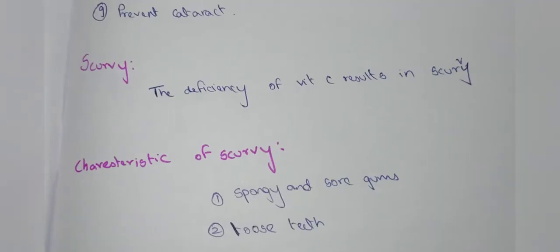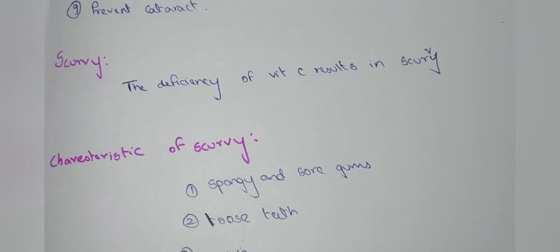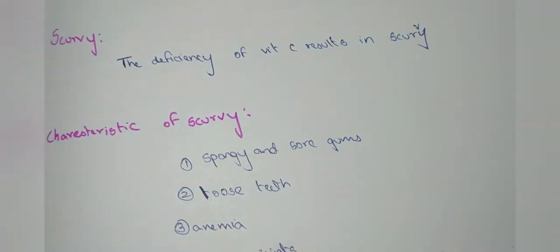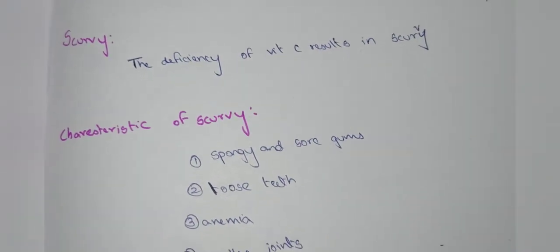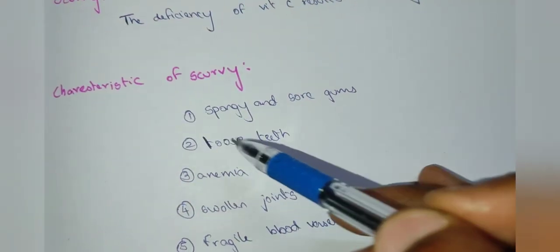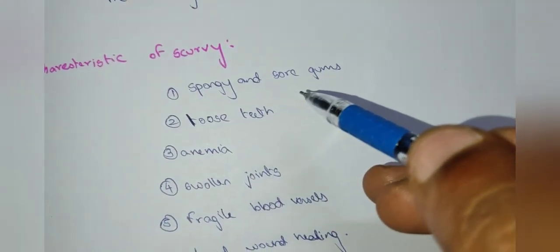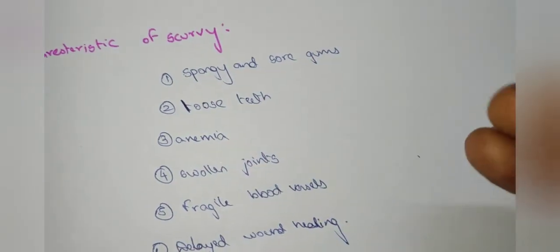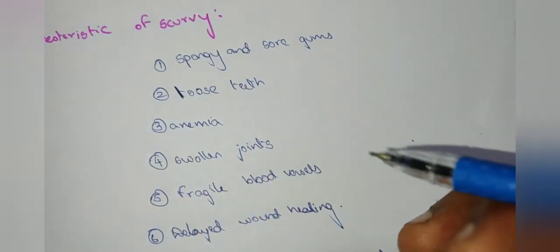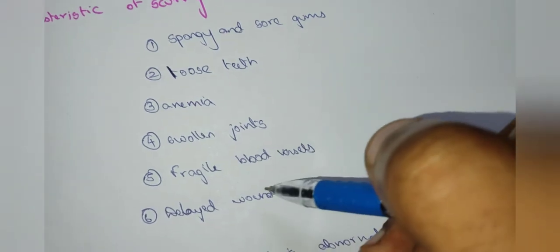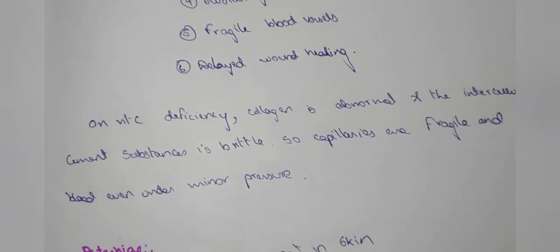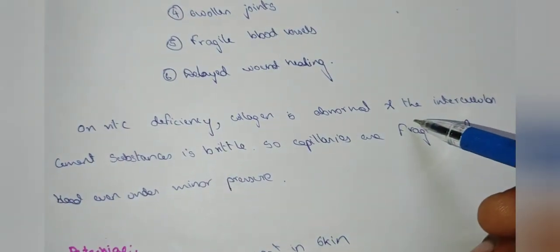Vitamin C also helps prevent cataracts and benefits the skin. Deficiency of Vitamin C results in scurvy. Symptoms of scurvy include spongy and sore gums, loose teeth, swollen joints, and anemia.